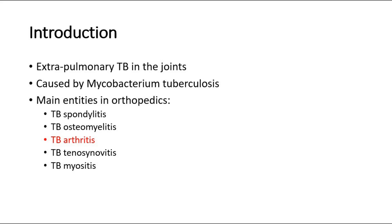TB arthritis generally affects large joints like the knee and can also lead to serious destruction of the joint and tendon, while also spreading to the surrounding bursa, muscles, and soft tissues. TB is a very important disease in orthopedics, with main entities including arthritis, tenosynovitis, and also myositis.